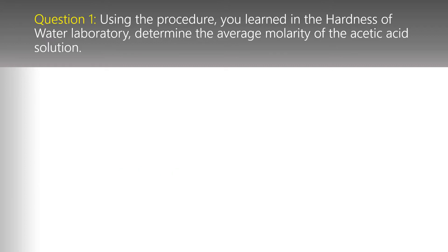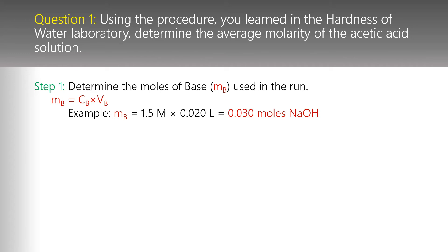In question one, it says: using the procedure you learned in the hardness of water laboratory, determine the average molarity of the acetic acid solution. We know the concentration of NaOH and the volume of NaOH used, which allows us to calculate the moles of NaOH. I'm going to use example data and a slightly different formula here, because part of this laboratory is learning to write the formula for the neutralization between NaOH and acetic acid.